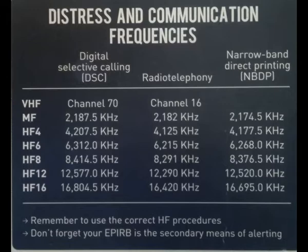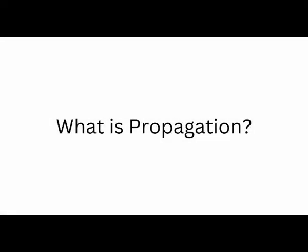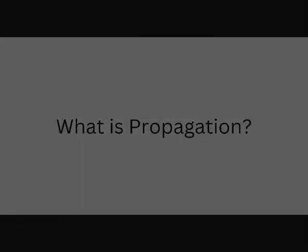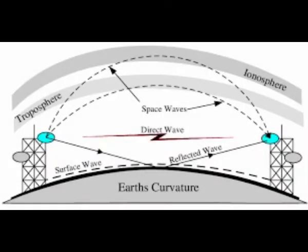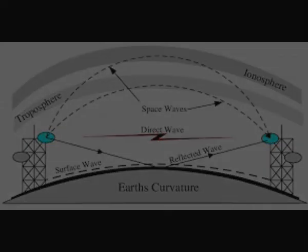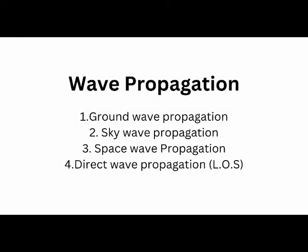Study and practice every day to master all these frequencies. Now, when we talk about different types of propagation of radio waves: propagation means the way in which a radio wave leaves the antenna and travels through space, air, water, ground, or whichever medium is possible, and reaches the receiver antenna. This movement of a radio wave in any medium is known as propagation. There are basically four types: ground wave, space wave, sky wave, and direct wave — also known as line of sight propagation.